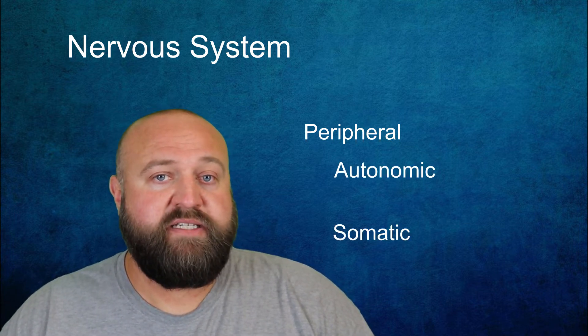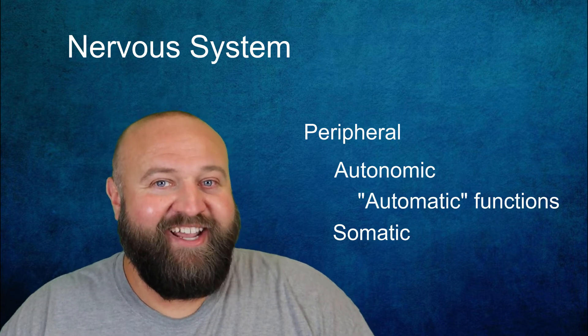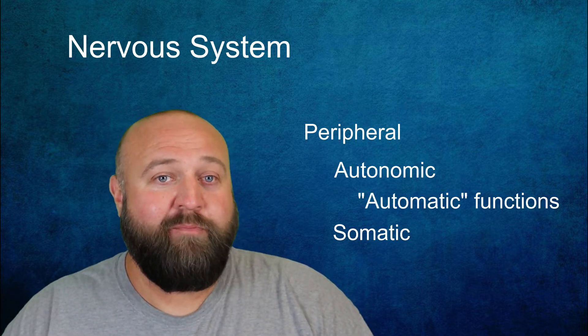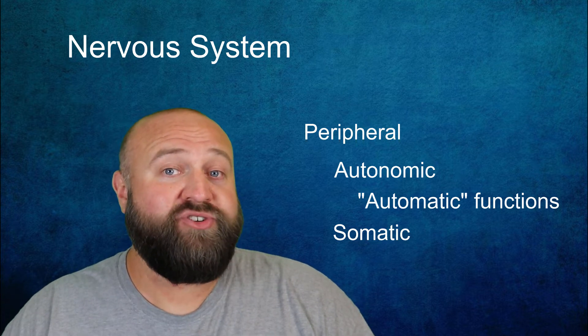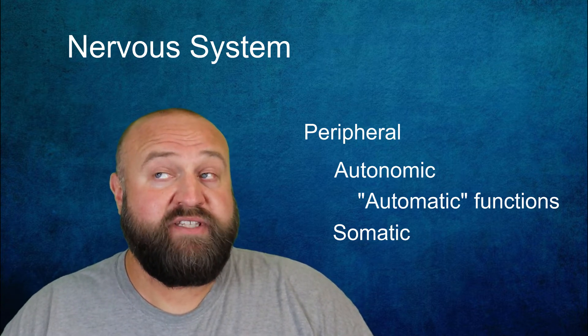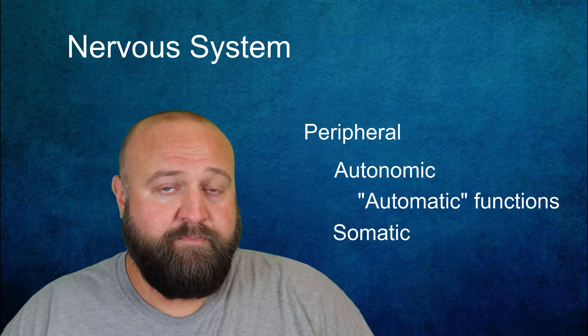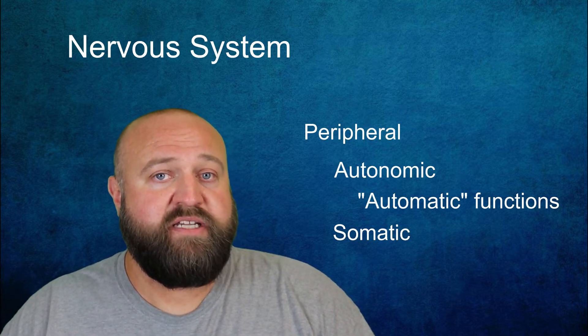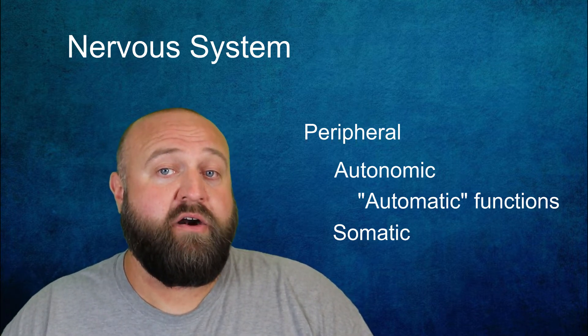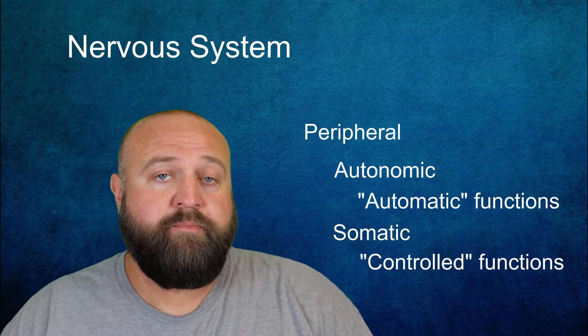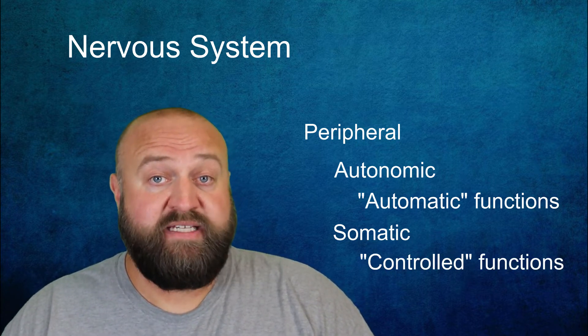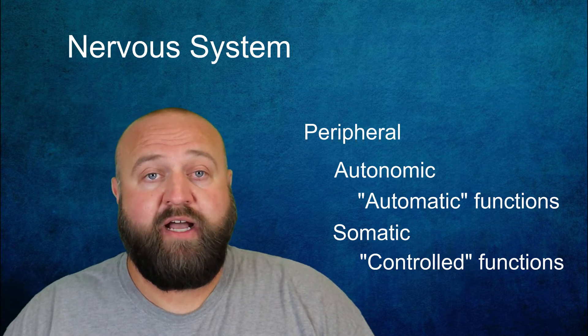The autonomic nervous system is automatic. It includes all those things that our bodies do that we aren't really consciously aware of or usually in control of. This includes things like our heartbeat. The somatic nervous system includes those things that we are in control of and aware of, things like walking or talking. The somatic nervous system isn't subdivided anymore but the autonomic is.